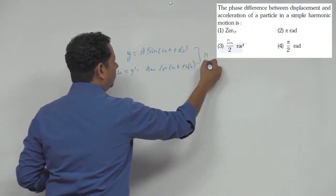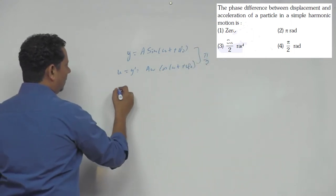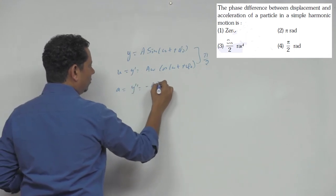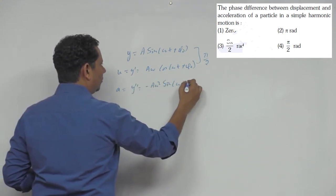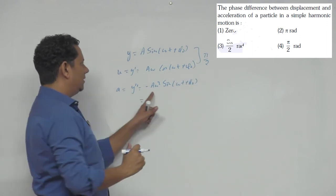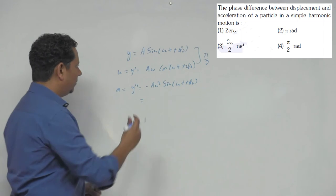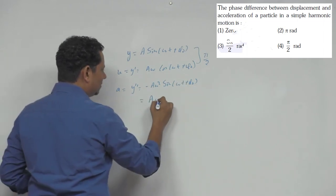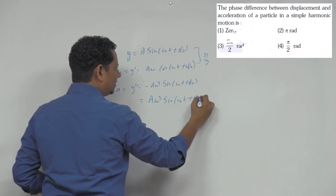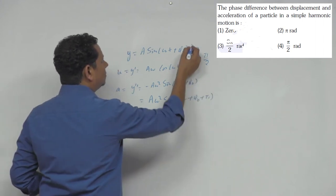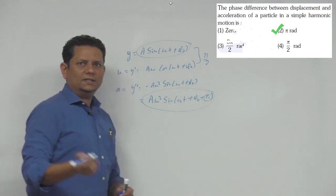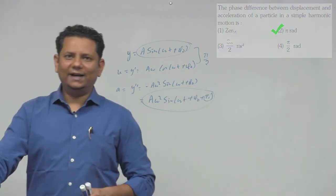Acceleration will be -Aω² sin(ωt + φ₀), which can be written as Aω² sin(ωt + φ₀ + π). So between displacement and acceleration there is a π phase difference, so π radian would be the right answer.